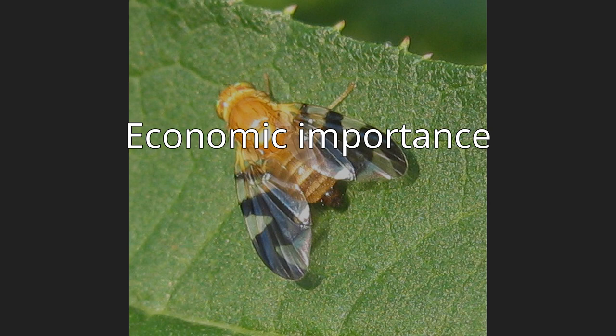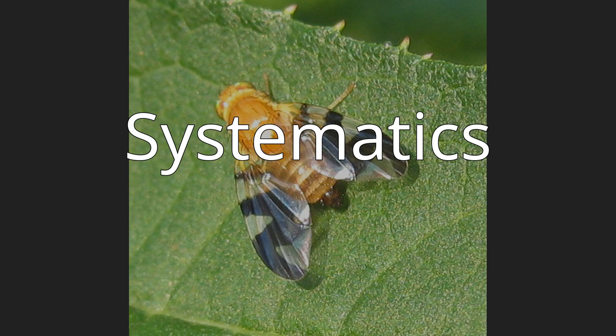Tephritidae is divided into several subfamilies: Blepharoneurinae — 5 genera, 34 species; Dacinae — 41 genera, 1,066 species; Phytalmiinae — 95 genera, 331 species; Tachiniscinae — 8 genera, 18 species; Tephritinae — 211 genera, 1,859 species; Trypetinae — 118 genera, 1,012 species. The genera Oxyphora, Pseudorelia, and Stylia comprise 32 species and are not included in any subfamily in certain classifications.